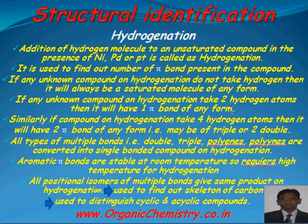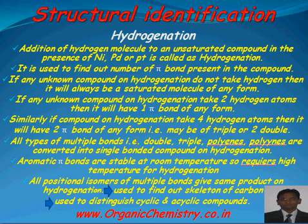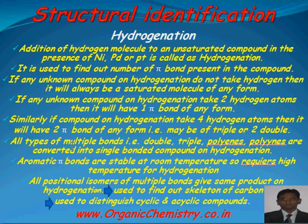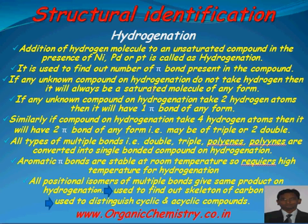If any unknown compound on hydrogenation takes two hydrogen atoms, then it will have one pi bond of any form — maybe carbon-carbon, carbon-nitrogen, or carbon-oxygen. Similarly, if a compound on hydrogenation takes four hydrogen atoms, then it will have two pi bonds of any form, that is maybe a triple bond or two double bonds. All types of multiple bonds — double, triple, polyenes — are converted into a single saturated compound on hydrogenation.